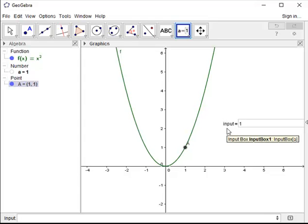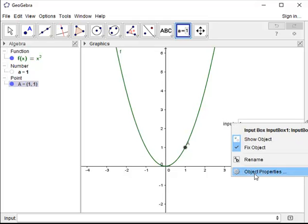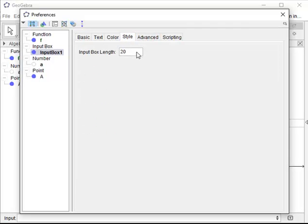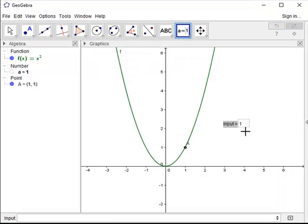I click OK, and there it says input equals 1. This box is a little long. It looks a little odd. We can fix that in object properties. If we go to style, we can change the length, and once I close this, now it's a much smaller box.